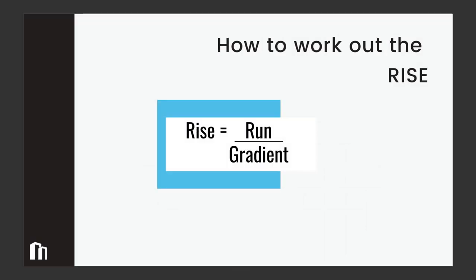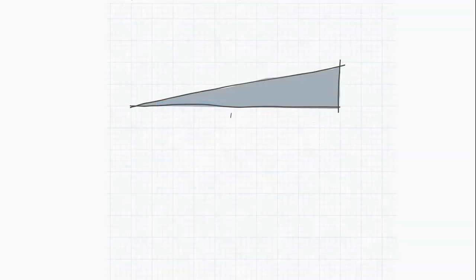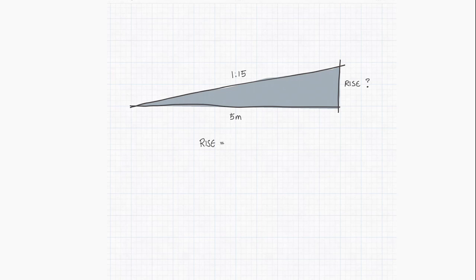Next we are going to look at how to work out the rise of a ramp. So here we have our slope again. In this instance we are wanting to work out the rise. We know the run is 5 meters and we know the gradient is 1 in 15. We know rise is equal to run over gradient. So the rise will be equal to 5 meters divided by the gradient. When we convert the units we then know that that is 5,000 millimeters divided by 15. So that equals the rise as 333 millimeters. Simple as that.